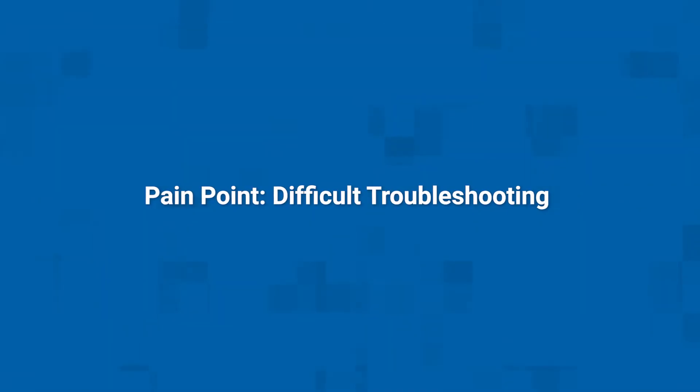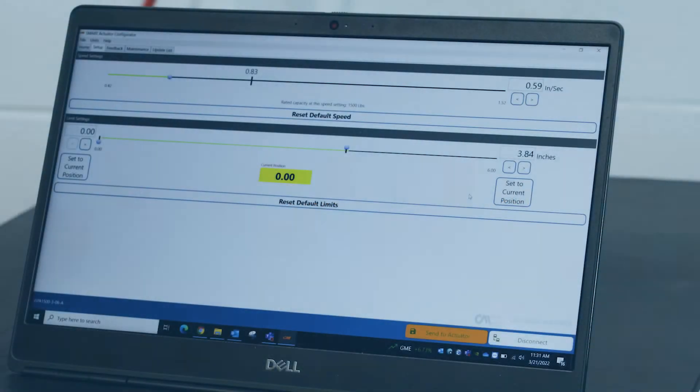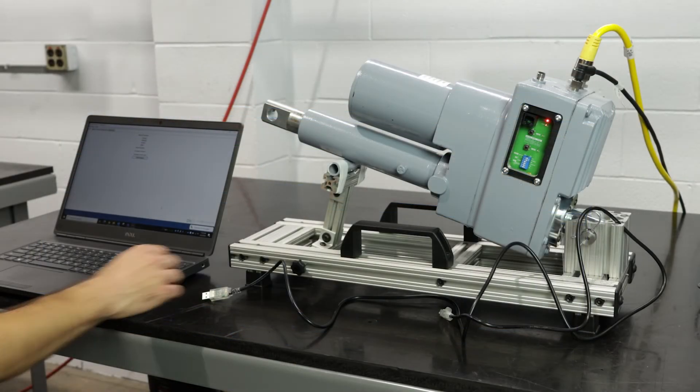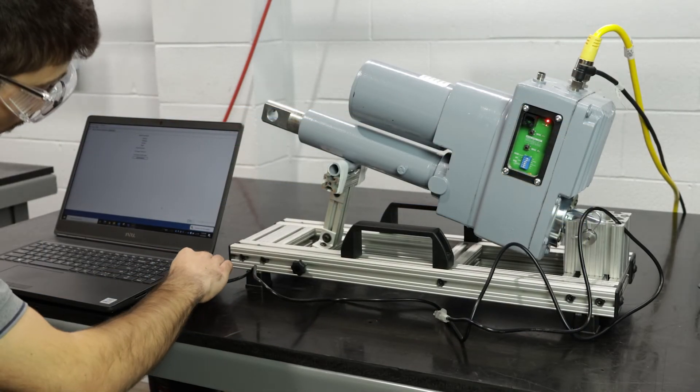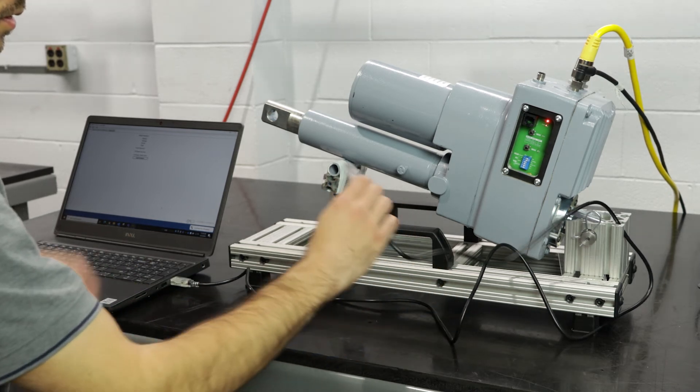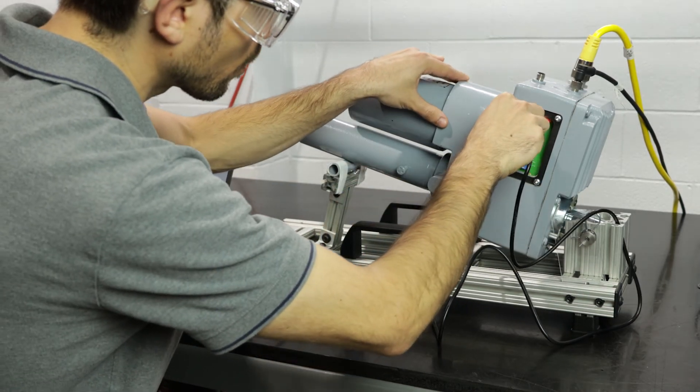If a fault happens while an actuator is operating, it can take a long time to diagnose the problem and fix it. We've made this easier. The SPA with Intellimotion can be connected to your PC to easily check your actuator status, make adjustments, and troubleshoot as needed.